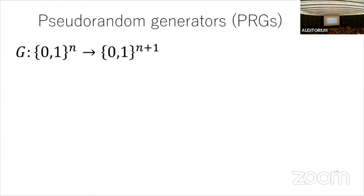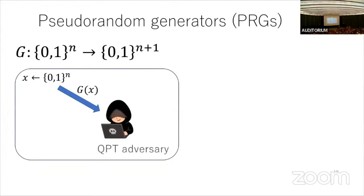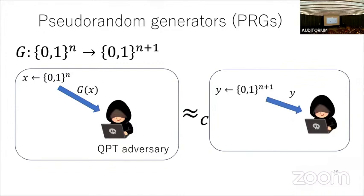The first primitive is a pseudorandom generator: a classical polynomial time algorithm that takes an n-bit string as input and outputs an n+1-bit string. Security is defined by indistinguishability of two experiments. In one experiment, a random x is chosen and G(x) is sent to a QPT adversary. In the other, a random n+1-bit string is sent. Security means they are computationally indistinguishable — the adversary cannot tell whether it receives G(x) or a truly random bit string.